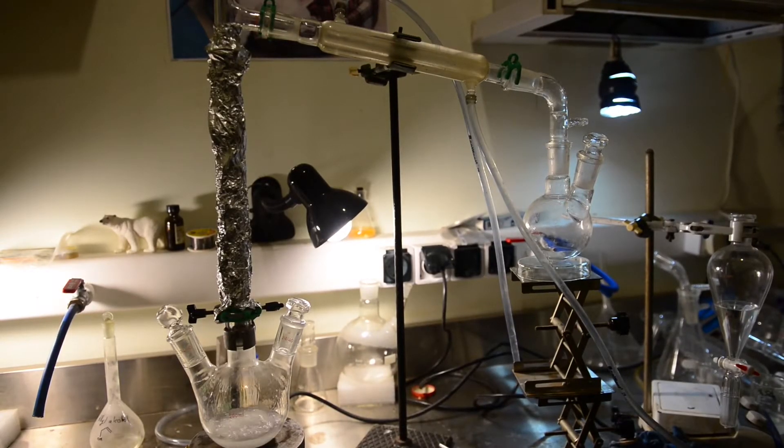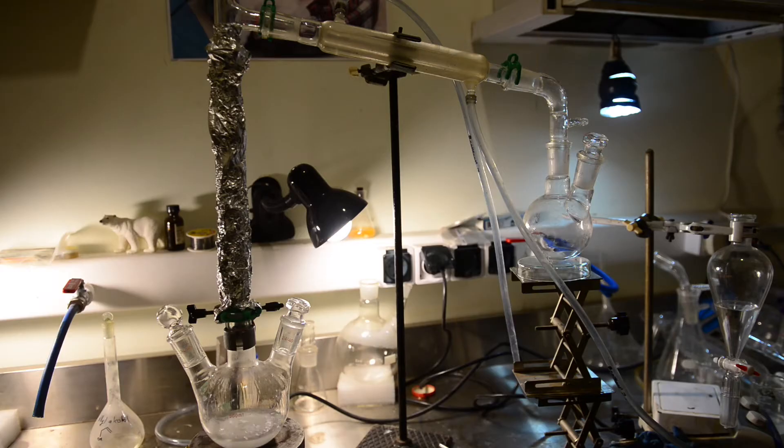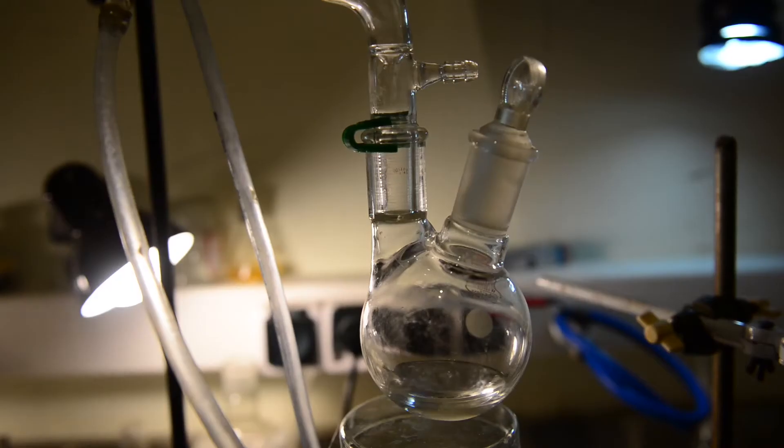After a while, the first fraction of distillate started to come over at 66 degrees Celsius. We collected fractions coming from 66 to 69 degrees Celsius and changed the receiving flask. The second fraction was collected with boiling temperature from 69 to 71 degrees.